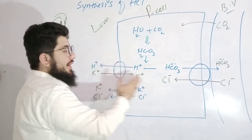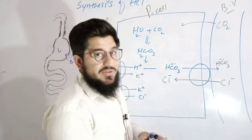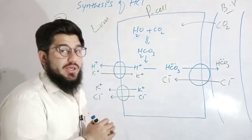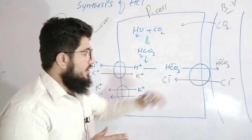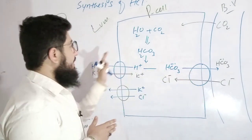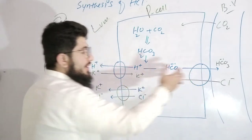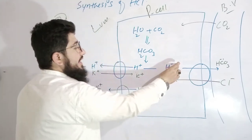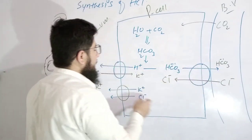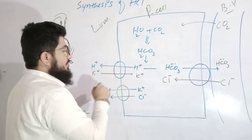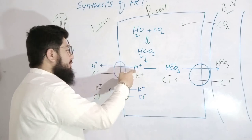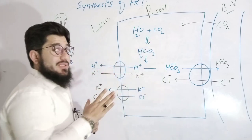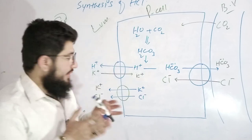One antiport transporter is located near the blood vessel and the other near the lumen. From the blood, chloride is taken into the parietal cells while bicarbonate moves toward the blood. The other transporter moves H⁺ toward the lumen and K⁺ toward the parietal cells.